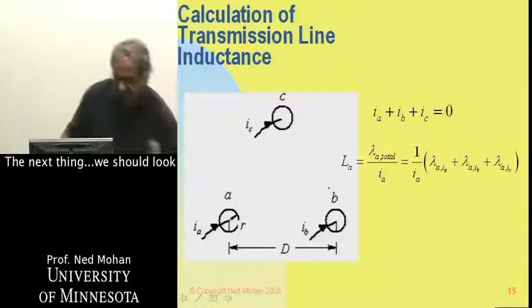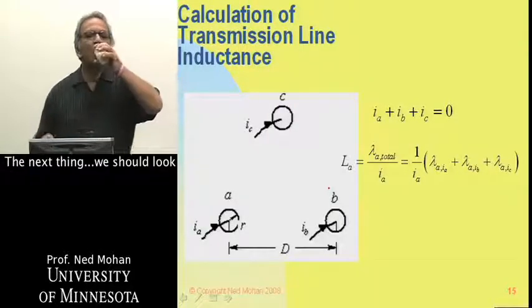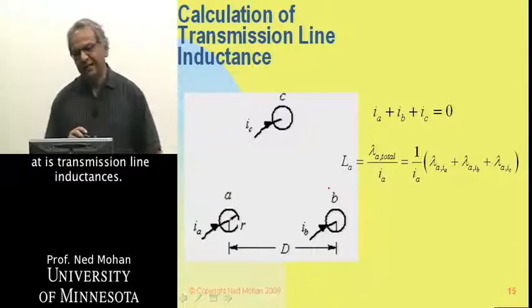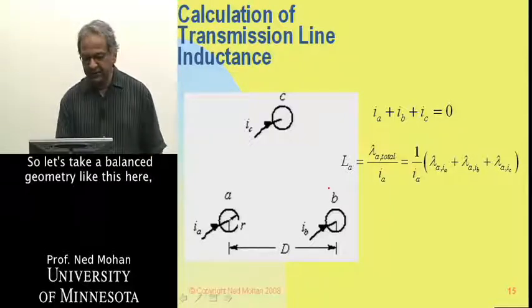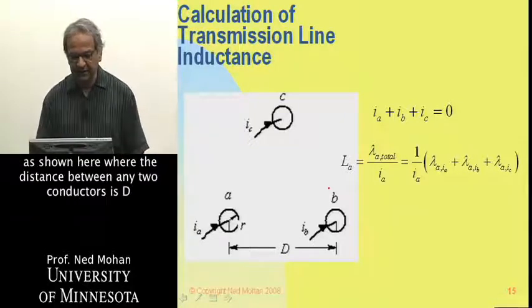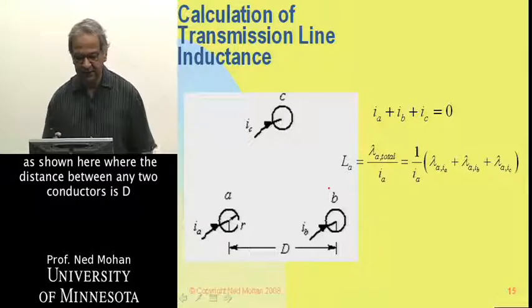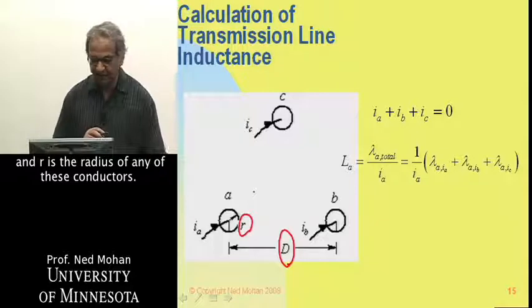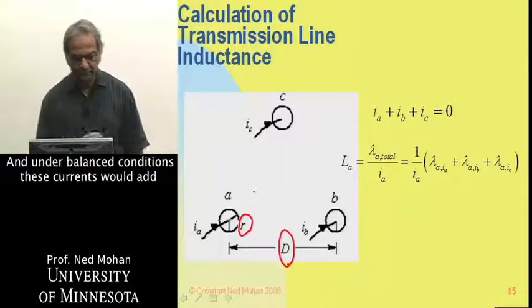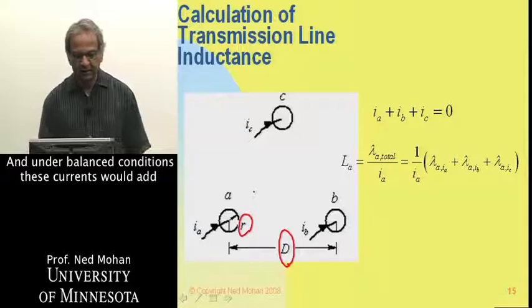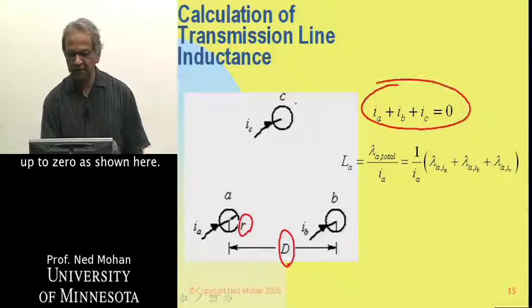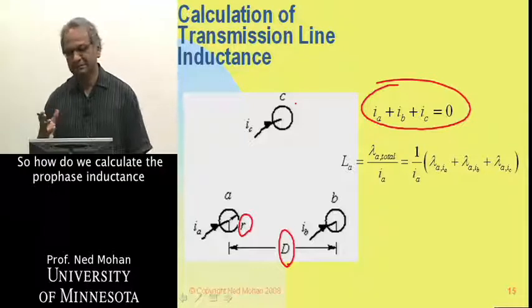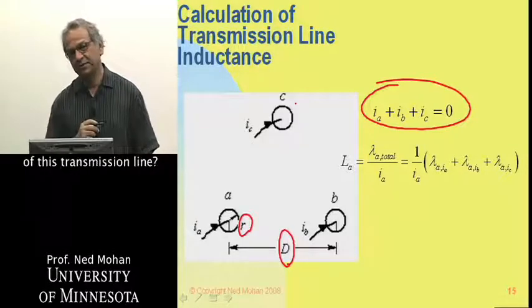The next thing we should look at is transmission line inductances. Let's take a balanced geometry like this, as shown here, where the distance between any two conductors is d, and r is the radius of any of these conductors. Under balanced conditions, these currents would add up to zero, as shown here. Ia plus Ib plus Ic is zero.